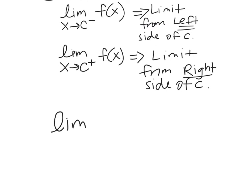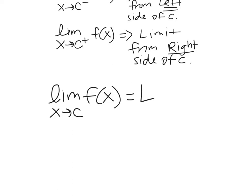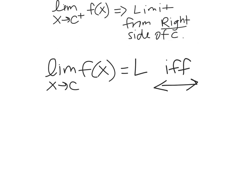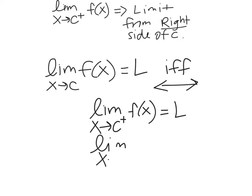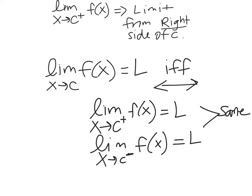Taking the limit as x goes to c of f(x), we know a limit can or cannot exist. The limit as x goes to c equals L if and only if the limit as x goes to c plus of f(x) equals L and the limit as x goes to c minus equals L. These two have to be the same in order for the limit to exist at c.